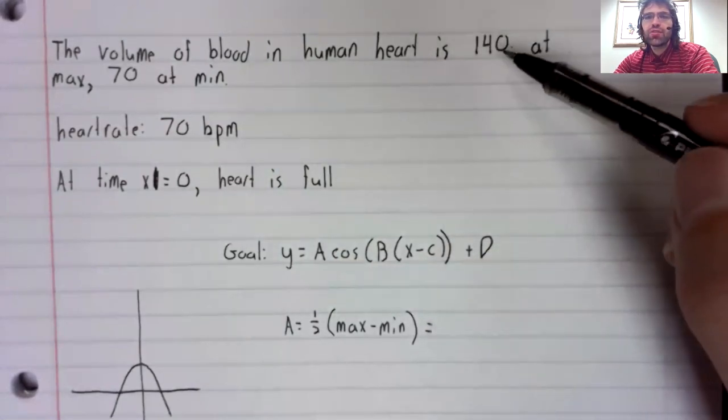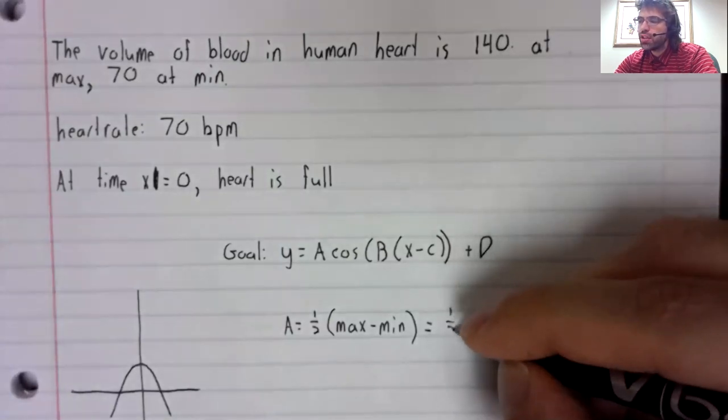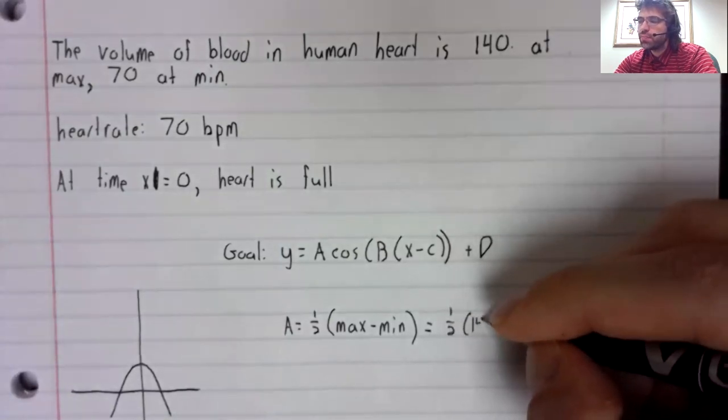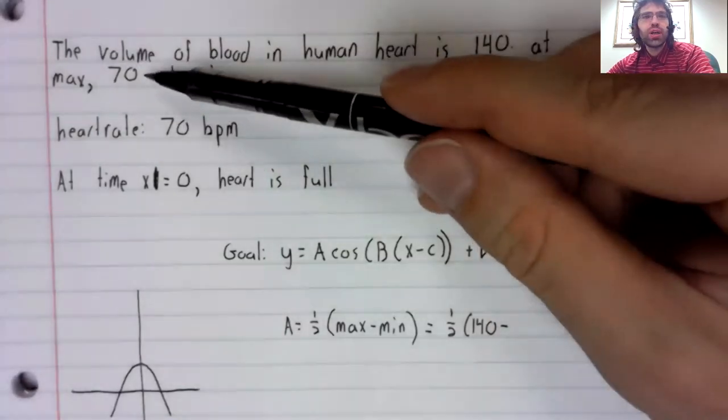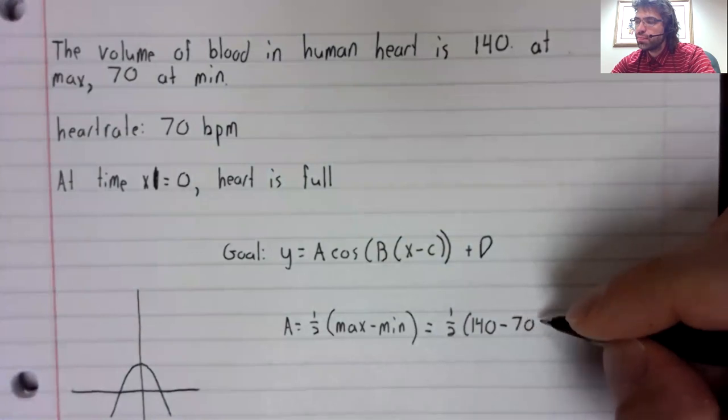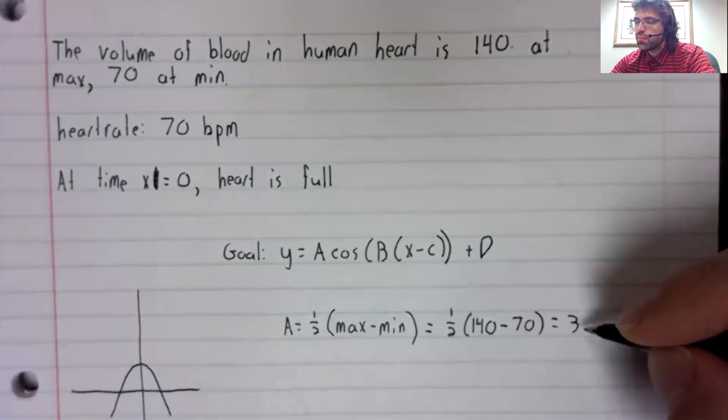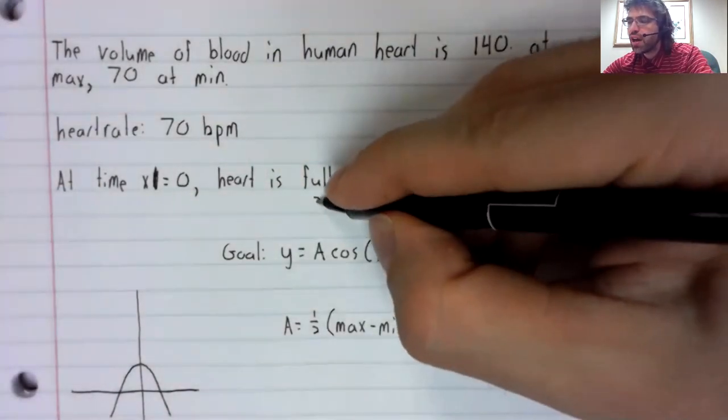And the maximum amount of blood is 140. And the minimum amount of blood is 70. So the amplitude is 35.